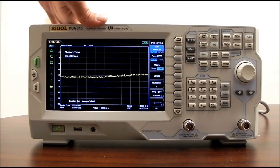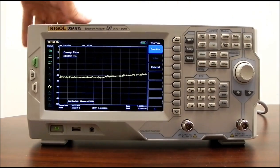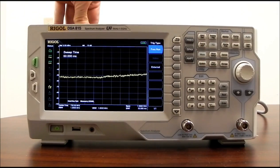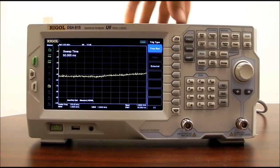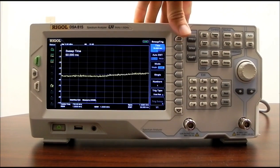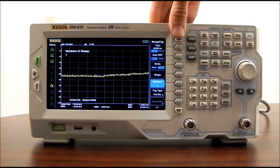We also have the ability to do an internal trigger, which is going to be free run. But we can also do external. There is a BNC connector on the back, a TTL level signal. So if you wanted to trigger it in an automated way, in order to capture images, you could do that as well. You can set the number of scans per trigger using that key there, the numbers key.